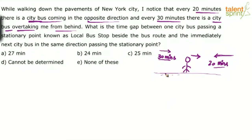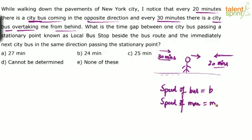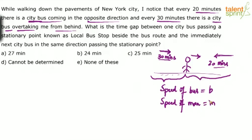Let us assume the speed of the bus is B and the speed of the man is M. This is going to be a concept of relative speed because two objects are moving at the same time. When the bus comes in the opposite direction, the two bodies are moving in opposite directions — so the relative speed concept applies. Similarly, when buses come from behind, both bodies are moving in the same direction, so again we have the concept of relative speed. So B and M are the speeds of the bus and man respectively. Every 20 minutes a bus comes from forward; every 30 minutes a bus comes from behind.